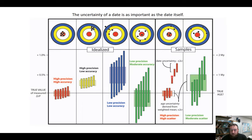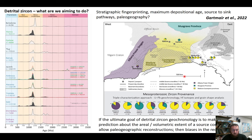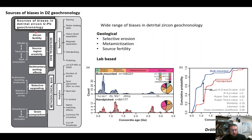This is relevant when we consider detrital zircon geochronology, because what we're trying to do is minimize sources of bias and get the most representative detrital zircon fingerprint to compare to source regions. Here's a range of different detrital zircon signatures generated at Curtin to look at the Eucla basin. A key question is whether the relative heights of the Mesoproterozoic peaks versus Archaean peaks reflects volumetric source material — enabling paleogeographic reconstruction — or whether it reflects selective biases such as fertility, selective erosion, sorting effects, or loss of grains from uranium-enriched sources.